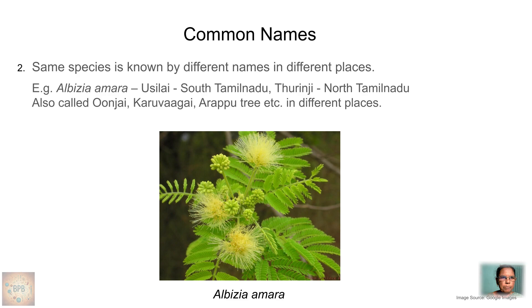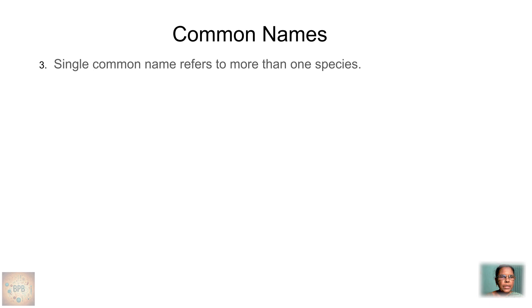For example, Albizia amara, which belongs to the family Fabaceae, is called Ussilai in South Tamil Nadu and Turinji in North Tamil Nadu. It is also called Oonjai, Karuvahai, Arab tree, etc. in different places. So this plant, Albizia amara, has many different names in different areas — many names to one species.